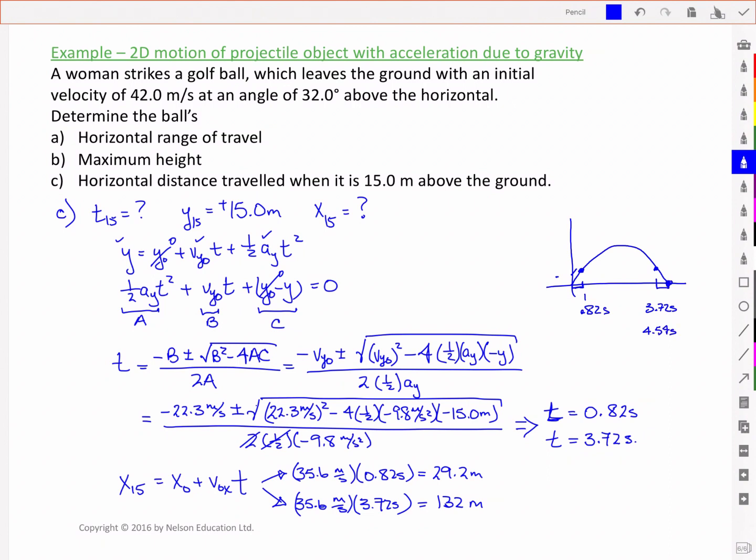And indeed if we take 4.54 seconds, which was this time here, and we subtract 3.72 seconds, we get a value of 0.82 seconds. So this time 3.72 seconds is just 0.82 seconds before it hits the ground. And this one is 0.82 seconds after it was at the ground. And just by symmetry that's what we would expect. So that also checks out.